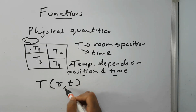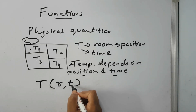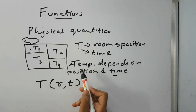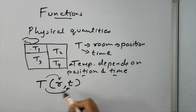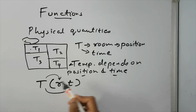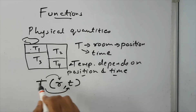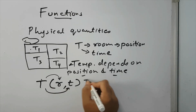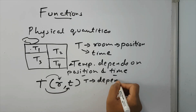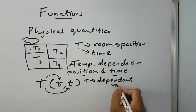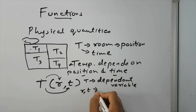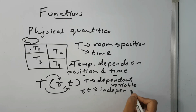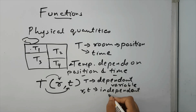Now, we have two physical quantities: position and time on one side, and temperature on the other. Among these, which depends on which? Temperature is dependent on position and time — not the other way round. Time does not depend on temperature. Position does not depend on temperature. So temperature here is called the dependent variable, and position and time are called independent variables.